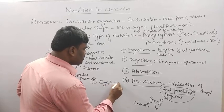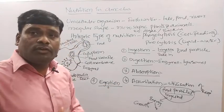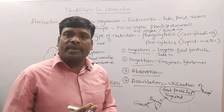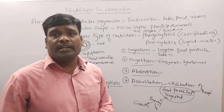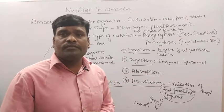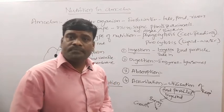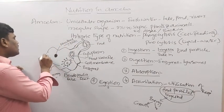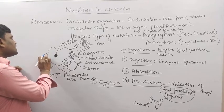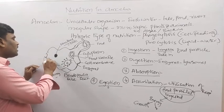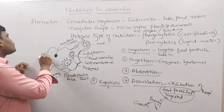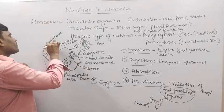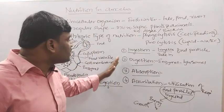The fifth step is egestion — expelling of waste materials. When food gets digested, certain undigested food materials are also produced, and these must be expelled outside from the body. Since amoeba has no specific opening, the undigested food particle reaches the cell membrane, which ruptures, and the undigested food is expelled outside.